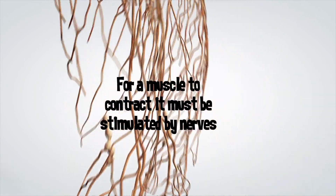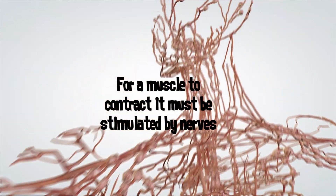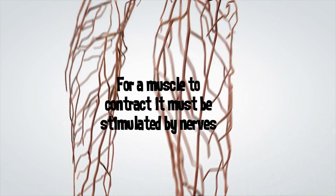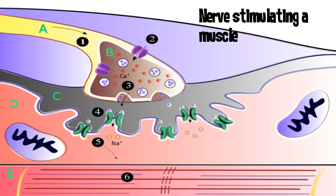For a muscle to contract and do work, its cells must be stimulated, most often by the nerves supplying them. Nervous impulses cause the release of a neurotransmitter, acetylcholine, at the nerve-muscle junction. This activates receptors on the surface of the muscle cell, making the muscle contract.